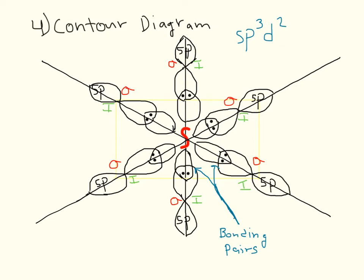Each one of the circles representing sulfur would be an sp3d2 orbital, and with the iodide we have our 5p. Since there are no double bonds, all the bonds are sigma bonds. With no lone pairs, all of these bondings are bonding pairs, and all angles are 90 degrees.